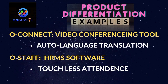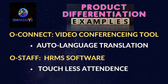OnPassive product differentiation examples: take OConnect, which is a video conferencing tool. Its product differentiation is auto language translation — it is not available elsewhere in the market. These are the unique features of OnPassive OConnect. Apart from other features, OStop HRMS software has touchless attendance as a unique feature. These features make the product differential examples.